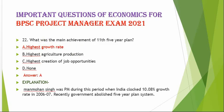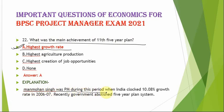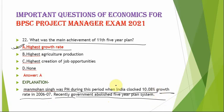The next question is: what was the main achievement of the Eleventh Five Year Plan? The correct option is option A — highest growth rate. Manmohan Singh was Prime Minister during this period when India clocked a 10.08% growth rate in 2006-2007. The government has since abolished the five-year plan system. The main achievement of the Eleventh Five Year Plan was the highest growth rate achieved.